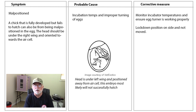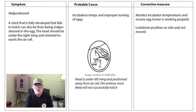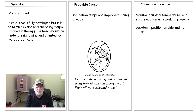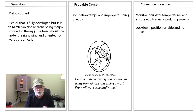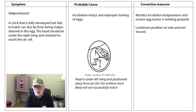Next, let's go back into malpositioning for an overview. A chick that's fully developed but fails to hatch can be malpositioned in the egg — the head should be under the right wing and oriented towards the air cell. If you open the egg carefully, you can determine the position the embryo is in. Any other position is a malpositioned egg, and again this comes back to incubation temperature and improper turning of the eggs.